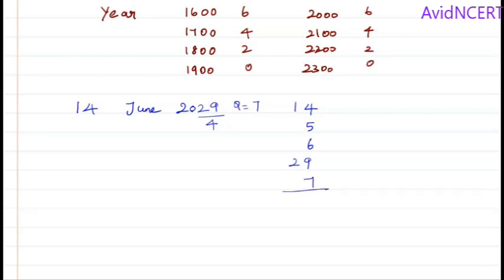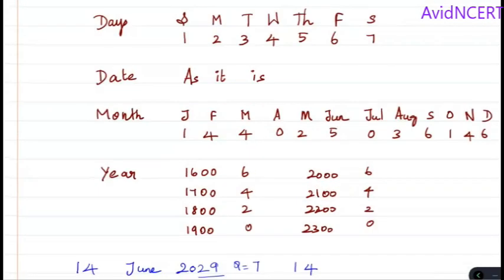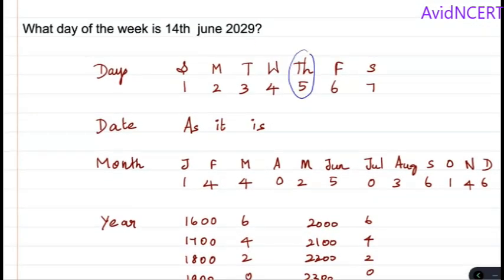Add all this, which is 14 plus 5 plus 6 plus 29 plus 7, which equals 61. Now, divide this 61 by 7 and we need the remainder. 7 times 8 is 56, and the difference is 5. This is the date code, which we have to check here. The date code 5 points to Thursday, which means 14th June 2029 is Thursday.